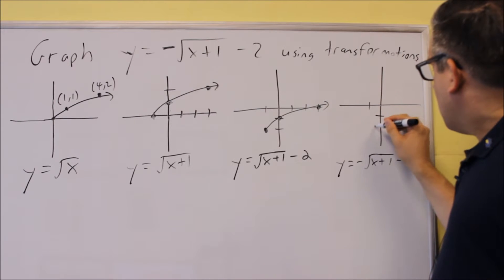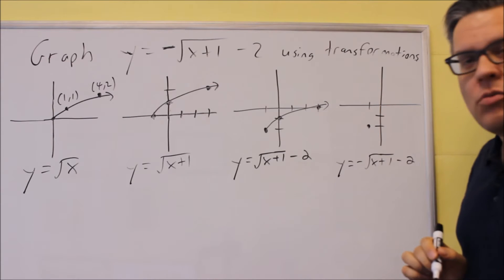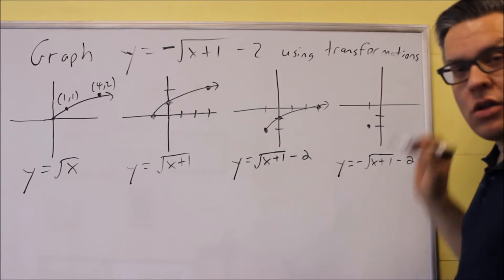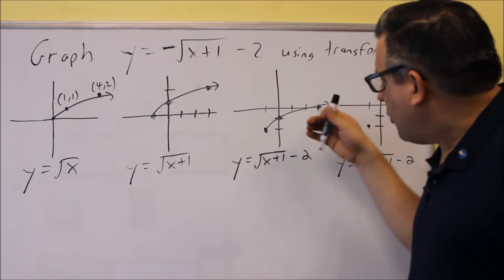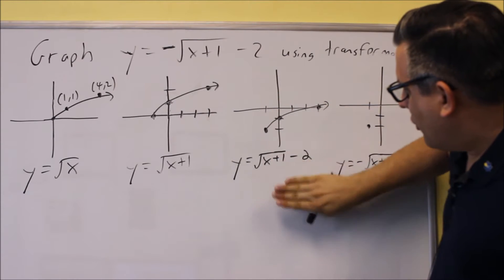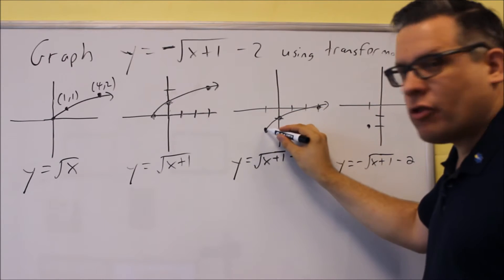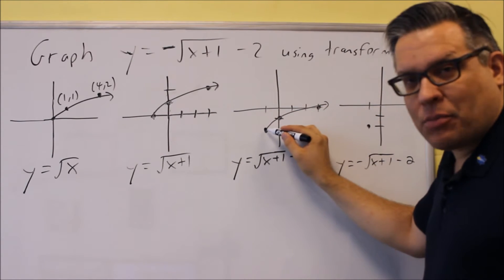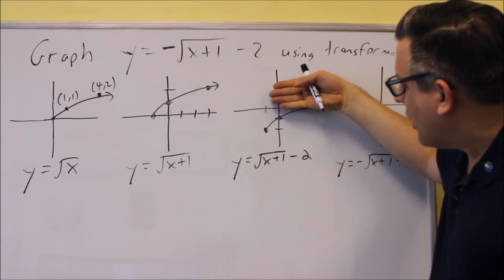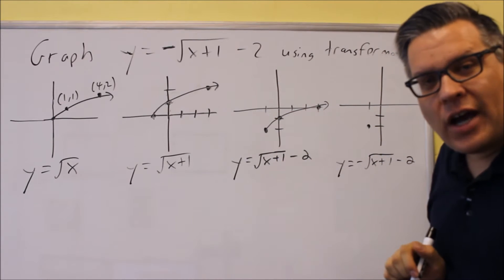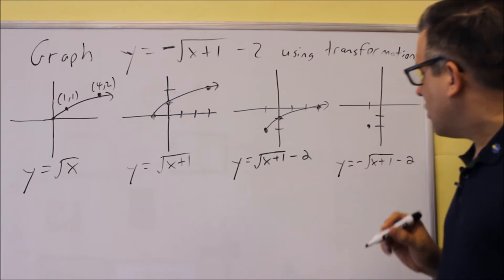Now it's still going to start at the same spot. It's still going to be at negative 1, negative 2. But we're taking the whole graph and we're flipping it over. This is our pivot point, so we don't want to leave that point. We're leaving the graph here, we're just going to take it and move it down.